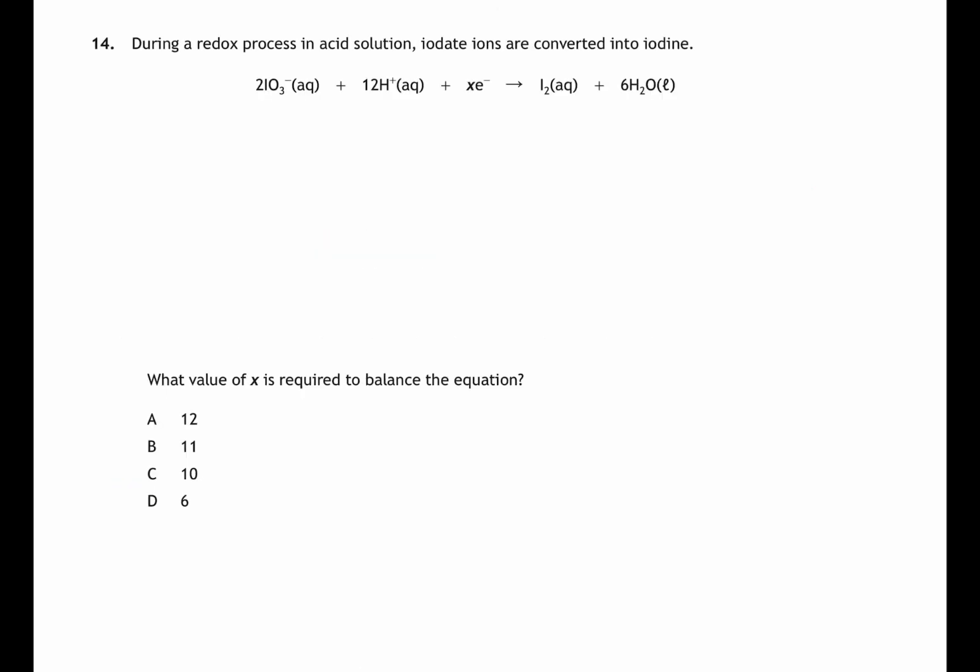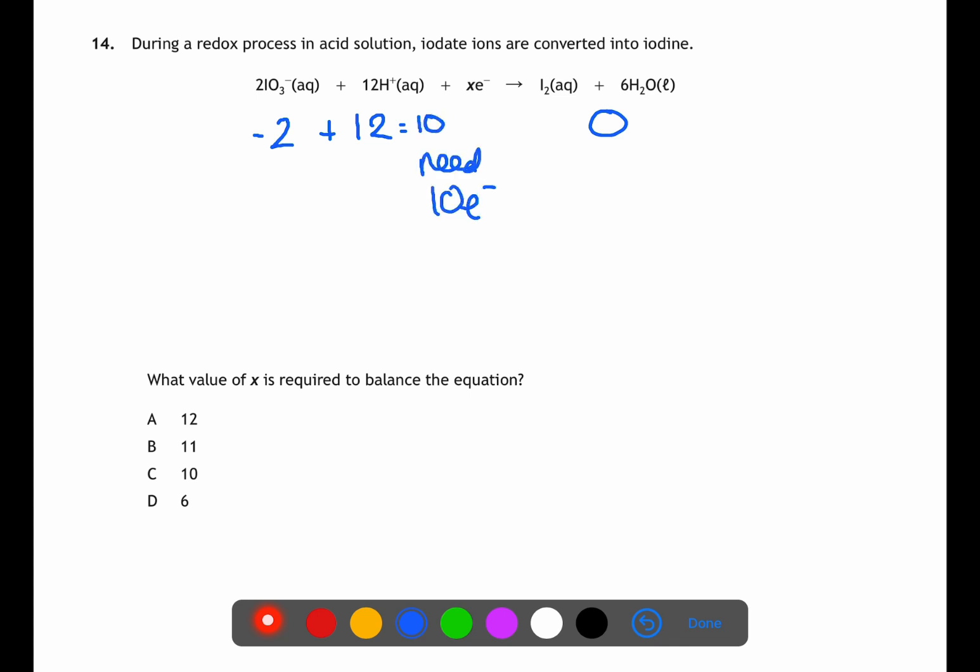In question 14 we're balancing a redox equation. On the left we have 2 minus plus 12 for our charge. On the right we have no charge. This means that we need to calculate the overall charge on the left hand side which is plus 10. This means we need 10 electrons to balance this equation.